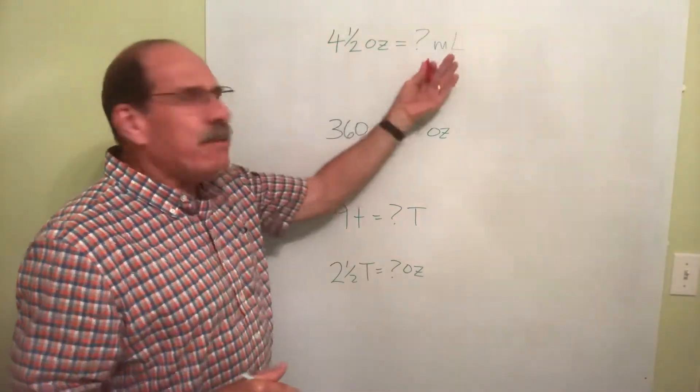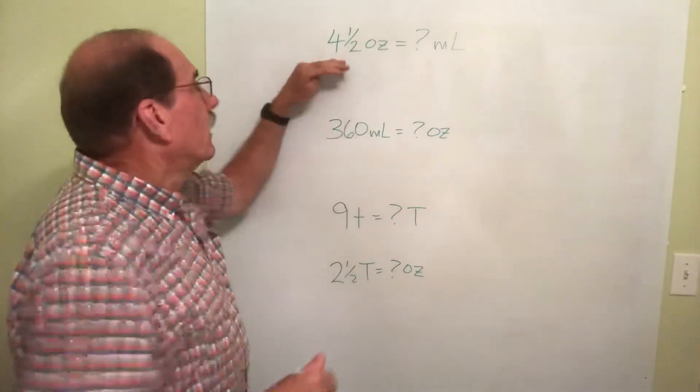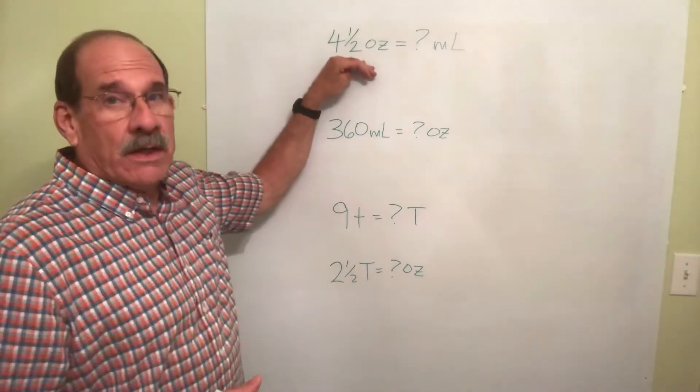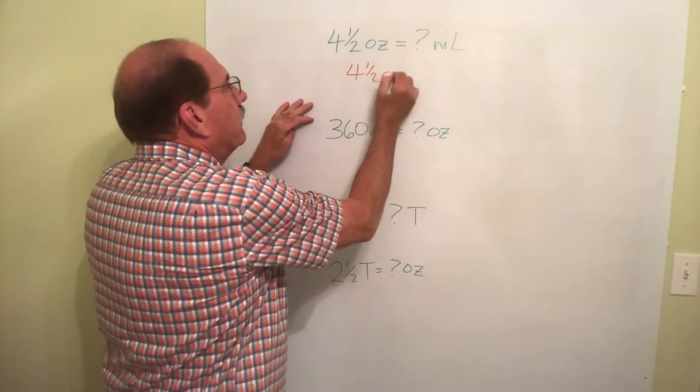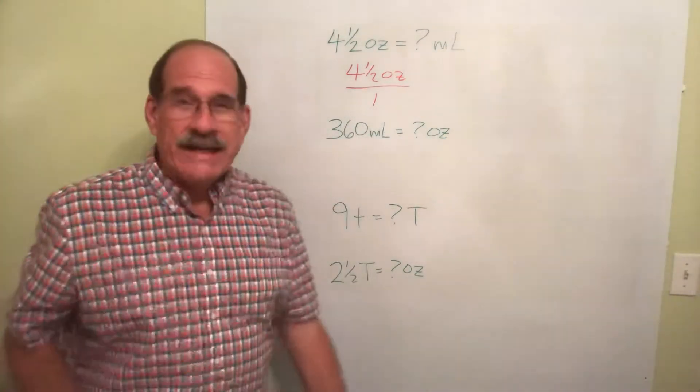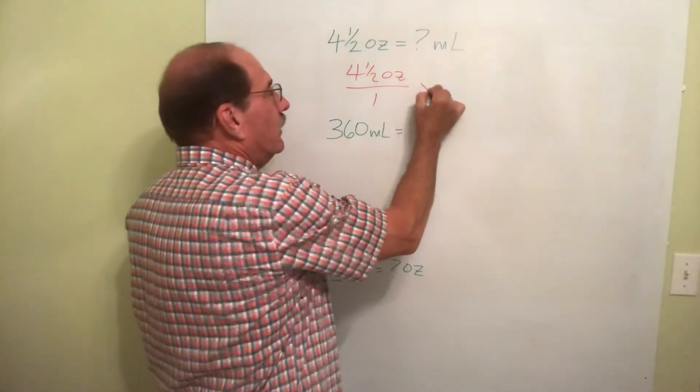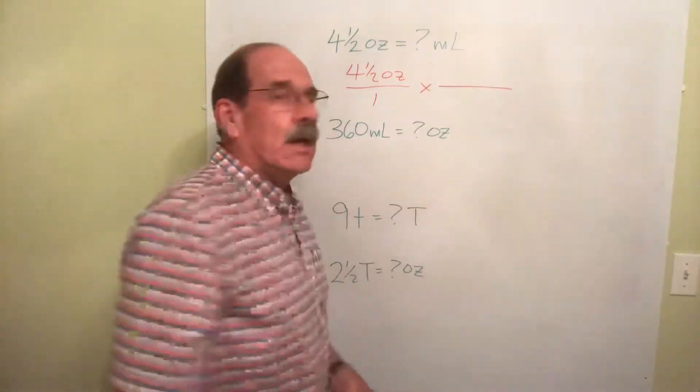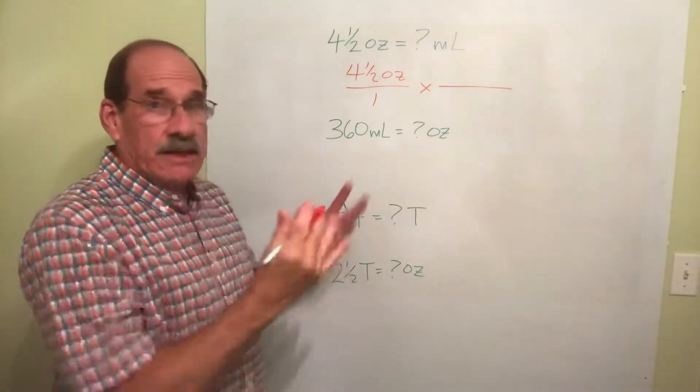Four and a half ounces - how many milliliters is that? The question mark means how many. So write this down, what I know. Write down what I know: 4 1/2 oz. Put it over one. I'm making it a number over one, which is the same number. I'm now multiplying by another fraction. Let me slow down, give you a chance to write this.